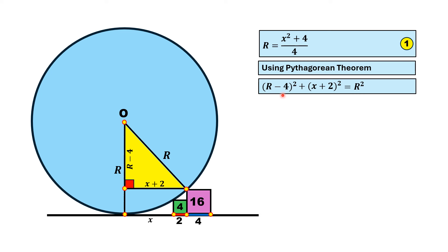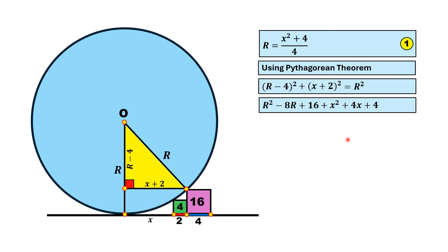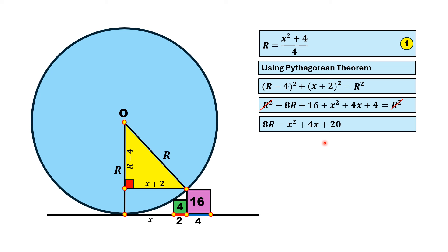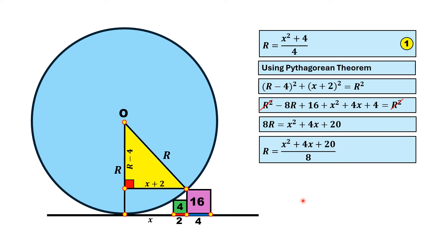Applying the Pythagorean theorem: (r minus 4) squared plus (x plus 2) squared equals r squared. Expanding, r squared minus 8r plus 16 plus x squared plus 4x plus 4 equals r squared. The r squared terms cancel, and after simplification we get 8r equals x squared plus 4x plus 20. Therefore r equals (x squared plus 4x plus 20) over 8. Let us call this Equation 2.